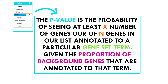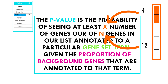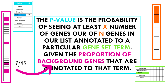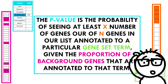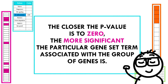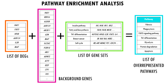To be precise, the p-value of a pathway is the probability of seeing at least X number of genes out of the total N genes in the list annotated to a particular gene set term — for example, Th1 differentiation — given the proportion of genes in the whole genome annotated to that gene set term. The closer the p-value is to zero, the more significant the gene ontology term associated with that group of genes, and the less likely this was all just by chance.